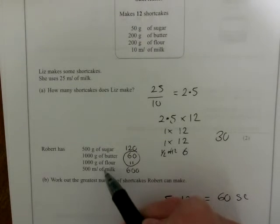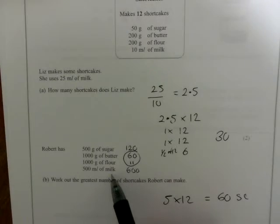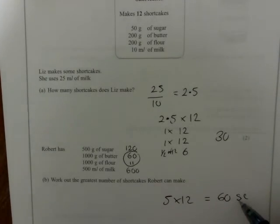And so, you could make 60 shortcakes. Remember, you have to have the right proportions of ingredients. Although you could make more, you've got enough sugar to do more, enough milk to do more, you were limited by the amount of butter and flour that you had to 60 shortcakes. I hope that's clear.